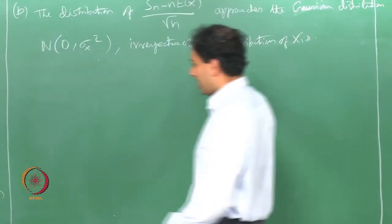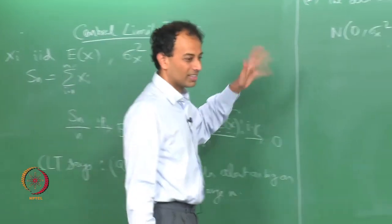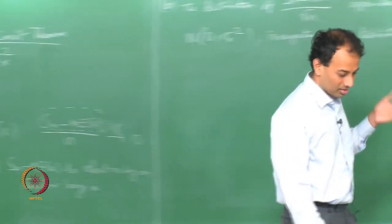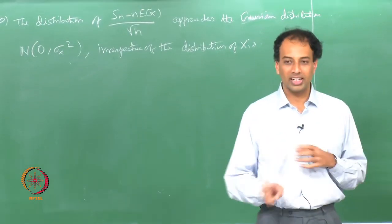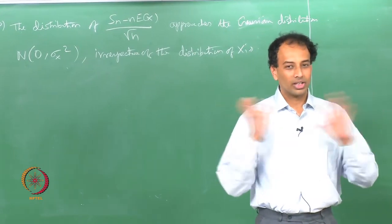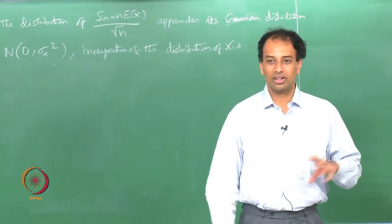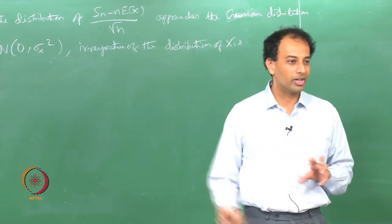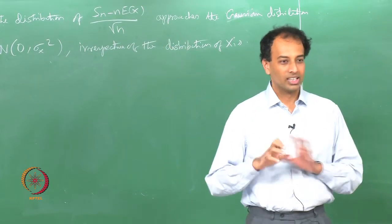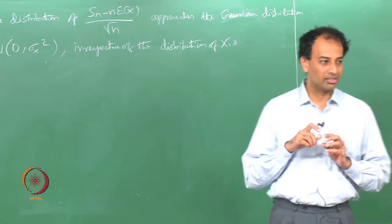This is the IID version of CLT. There are more general versions where you do not necessarily demand IID — you can relax that, you can have some decaying correlations, or X_i's can be differently distributed, but no one of them should dominate very strongly. In those circumstances you can get a CLT, but we will only bother about this IID version.